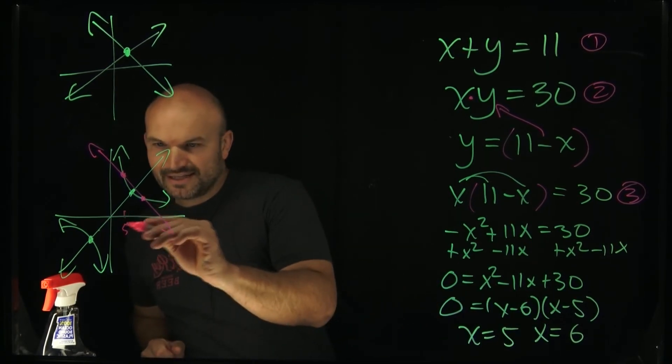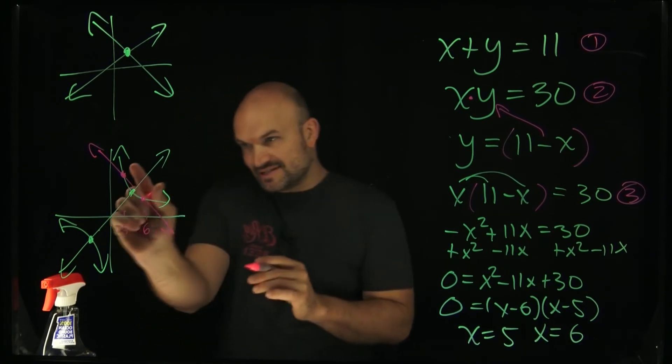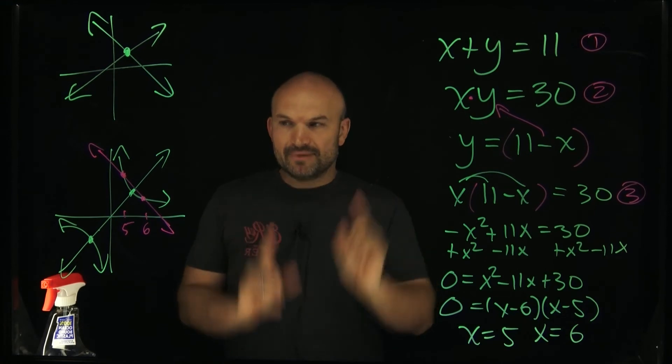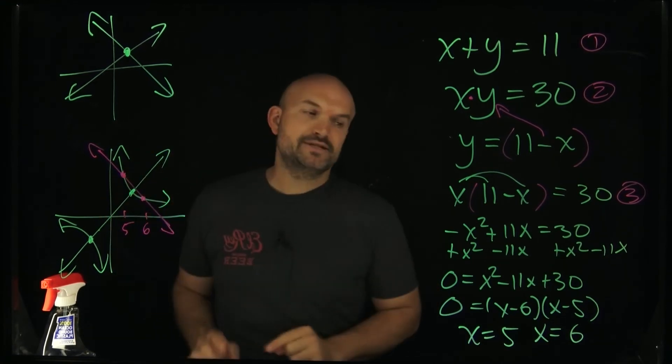So you can see, again, we're kind of looking like this. Here's 5 and here's 6. You could see those are going to be your two solution points, your two points where the graph is actually crossing. But again, we're looking for the coordinate points, ladies and gentlemen.